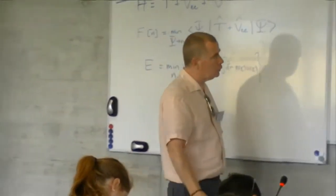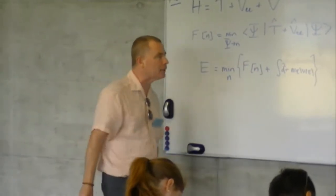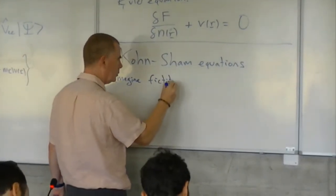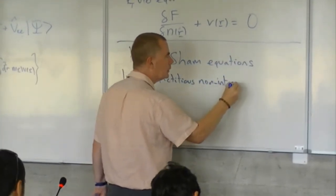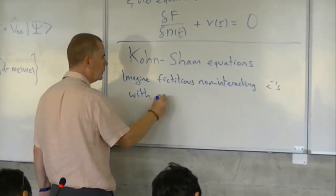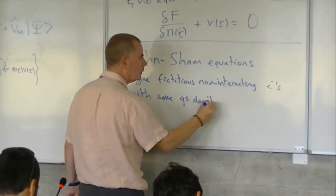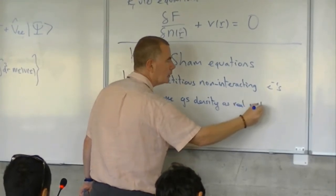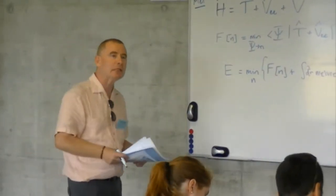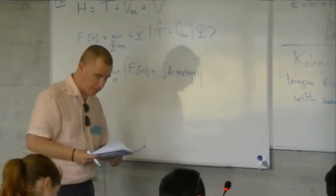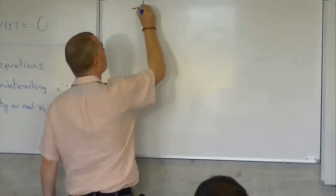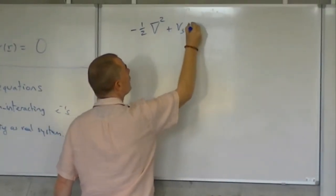And to — well, in a certain sense, you almost don't derive them, you postulate them. So you imagine fictitious non-interacting electrons with the same ground state density as the real system. And in a sense, that's it — that's almost everything. Everything that now follows just follows from that starting point. So if you have non-interacting electrons, then they will satisfy a non-interacting Schrödinger equation.